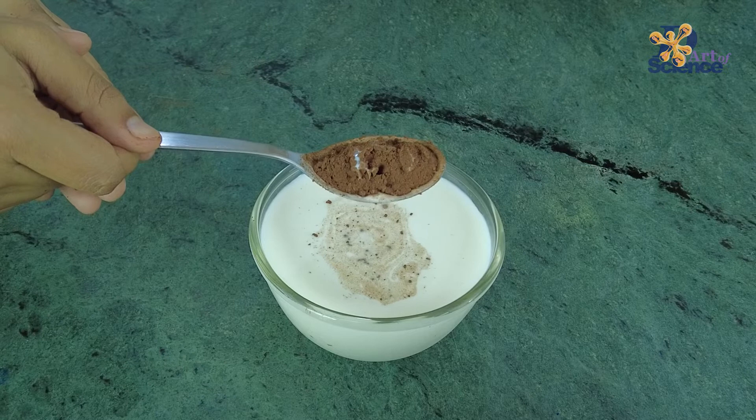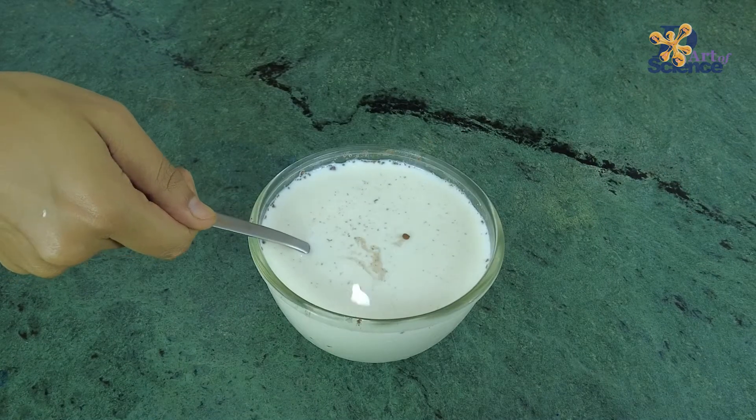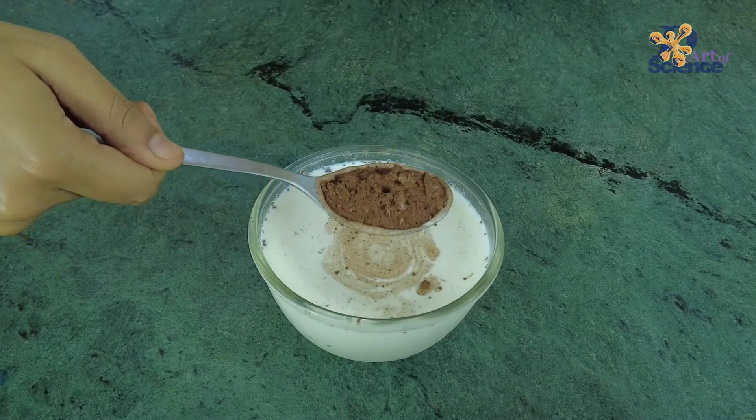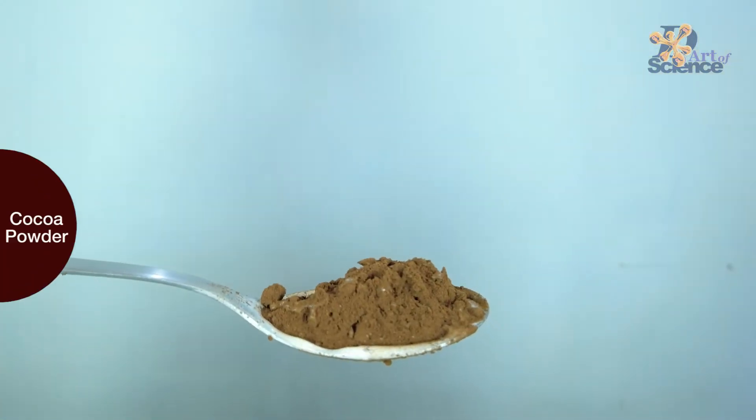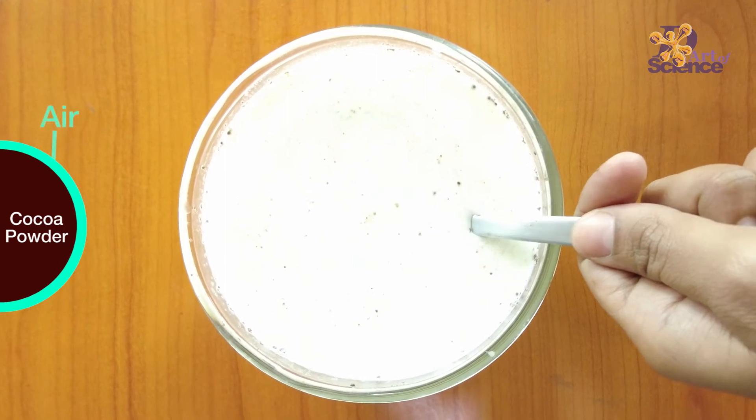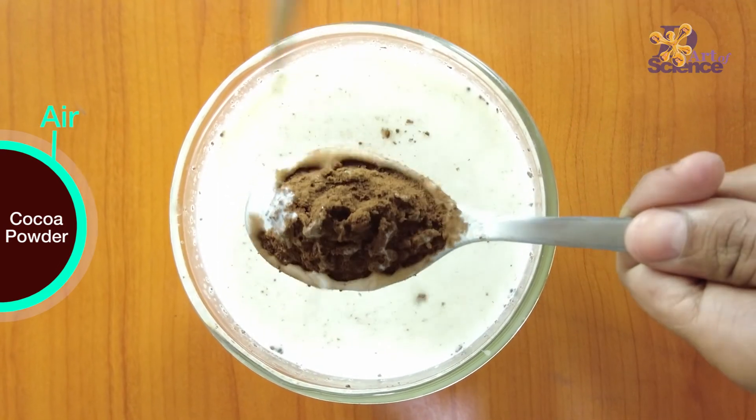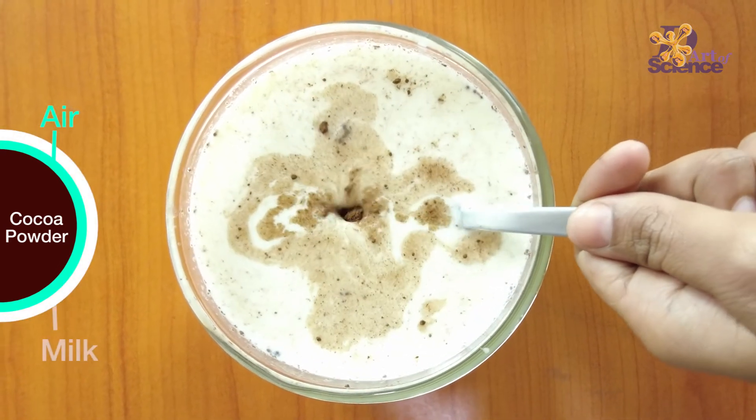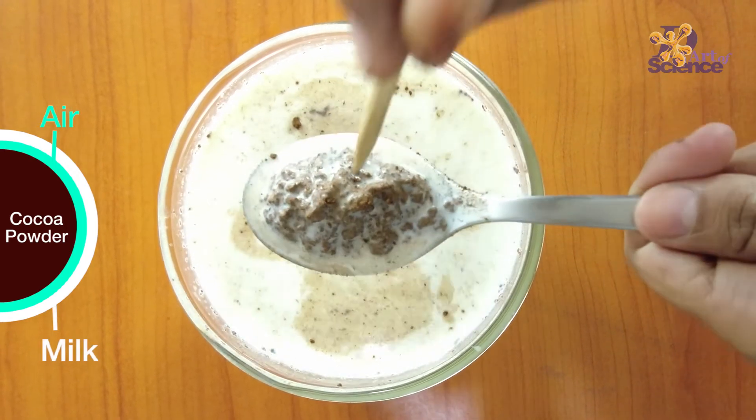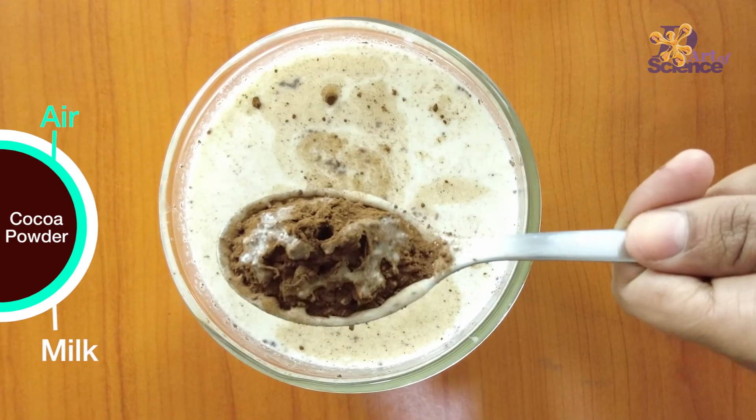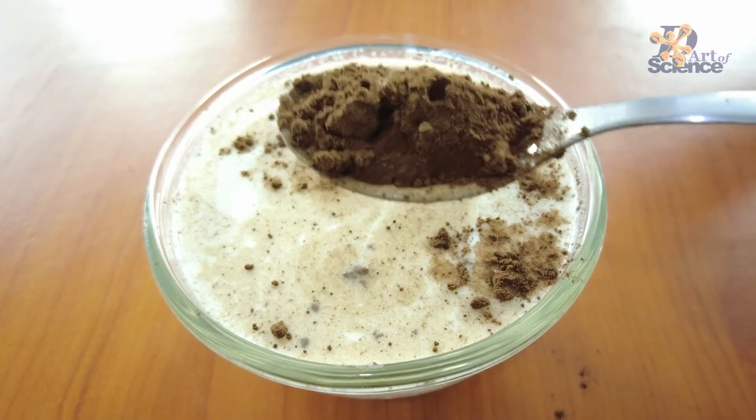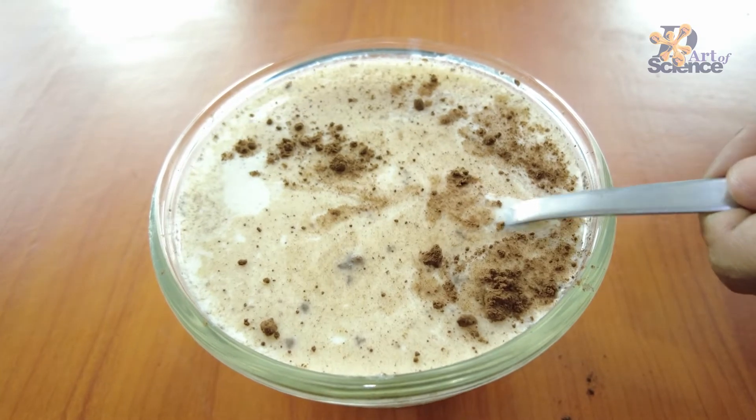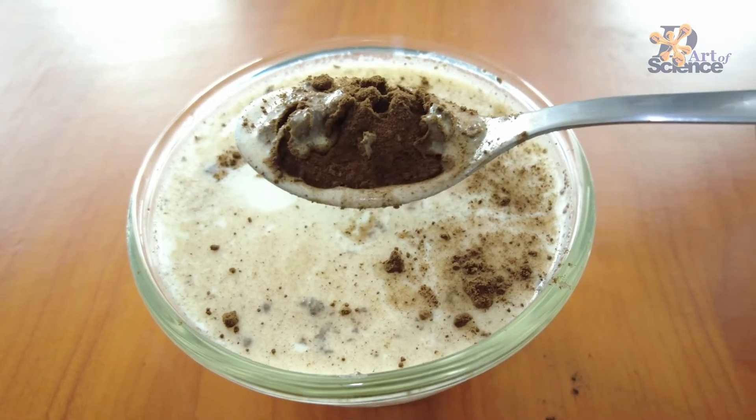What happens is cocoa powder repels water and milk but attracts air. When we try to dip it inside water or milk, it creates an air bubble around it. The thin film of water or milk just sits on top of this layer of air which does not allow the liquid to seep through the cocoa powder. On poking this with a toothpick, we break the surface tension of milk or water and let the air escape, resulting in the completely dry cocoa powder.